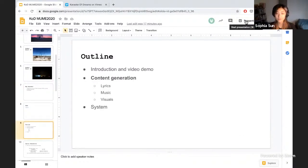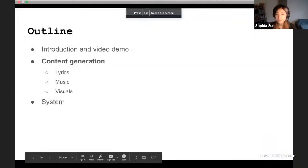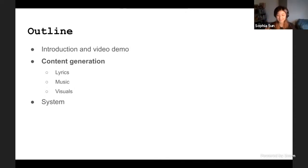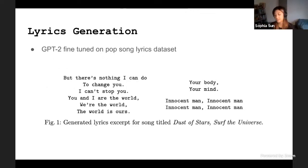Moving on to content generation: there are three parts in the karaoke — lyrics, music, and visuals — and we wanted all of them to be neurally generated. At Bombay Beach we only had one GPU, a shared resource powered by solar power, so we wanted to be resource-conscious. Instead of training models from scratch, we looked at downloadable, off-the-shelf trained models and used them in a modular way so we can swap in and out models to improve in the future.